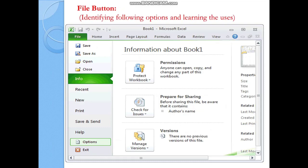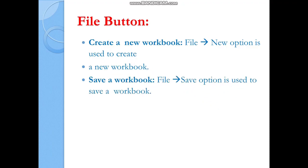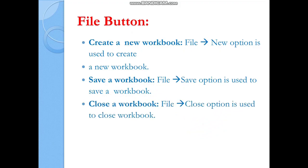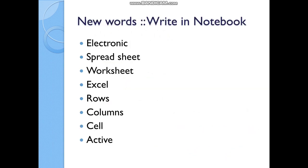After entering data, you can save the file. The File button is very important and works the same as in PowerPoint and MS Word. When you click the File button you get: Save, Save As, Open, Close, New, Print, and Exit options. Recently opened files are also sometimes displayed. The File button options are: File > New to create a new workbook, File > Save to save a workbook, File > Close to close a workbook, and File > Open to open an existing workbook.